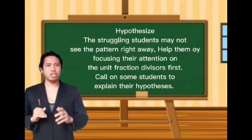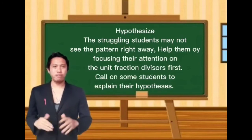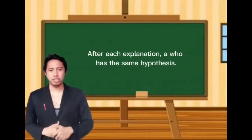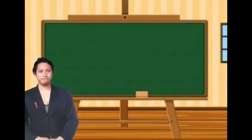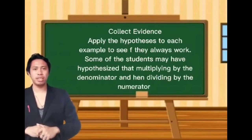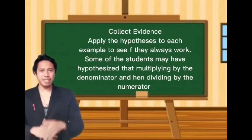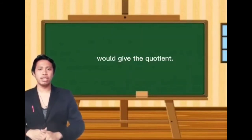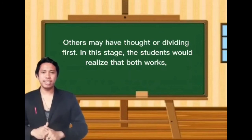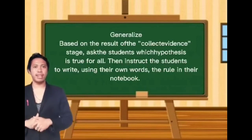Struggling students may not see the pattern right away, so help them by focusing their attention on the unit fraction division first. Call on some students to explain their hypothesis; after each explanation, ask who has the same hypothesis. Then proceed to collect evidence — apply each hypothesis to all examples to see if they always work. Some students may hypothesize that multiplying by the denominator and dividing by the numerator gives the correct answer; others may have thought of dividing first. In this stage, students will realize that both work.